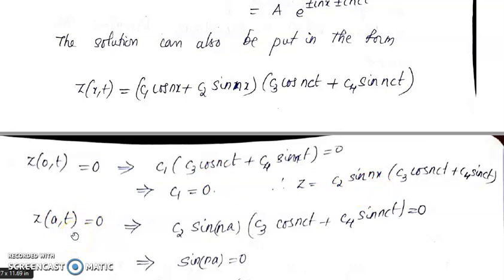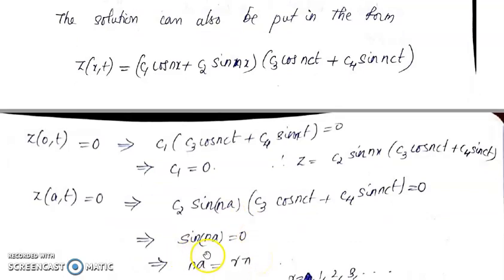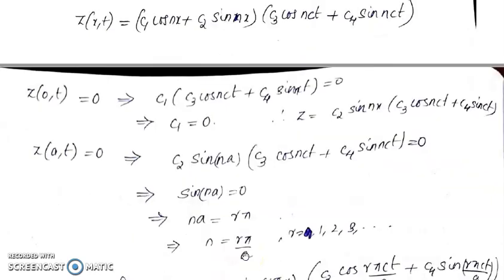Applying the second boundary condition z(a,t) = 0: replacing x by a gives c₂sin(na)·(c₃cos(nct) + c₄sin(nct)) = 0. Since c₂ cannot be zero (that would give the trivial solution), we need sin(na) = 0, which gives na = rπ, so sin(rπ) = 0 for r = 0, 2π, 3π, etc.